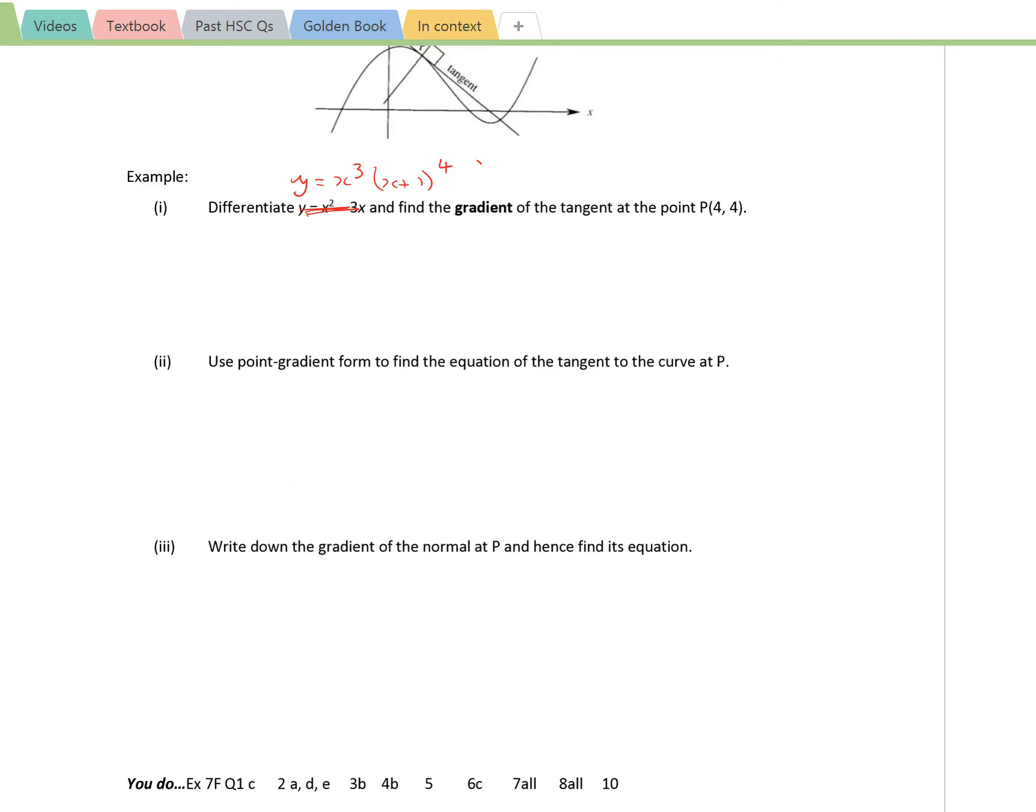Could I just ask you to cross out that function that I've got there and replace it with y equals x cubed bracket x plus 1 all to the fourth? Really, the function that's there doesn't require the product rule. So replace it with this one. Now we would use the product rule because we're not going to expand the bracket to the fourth power.